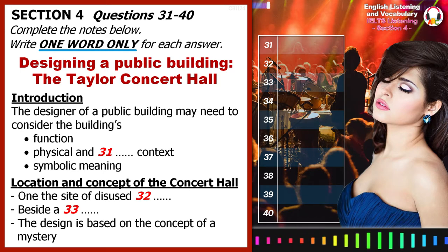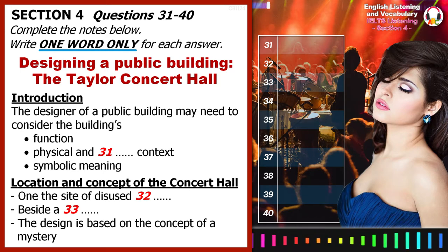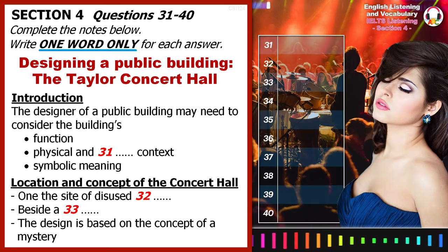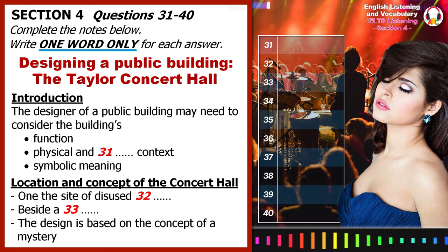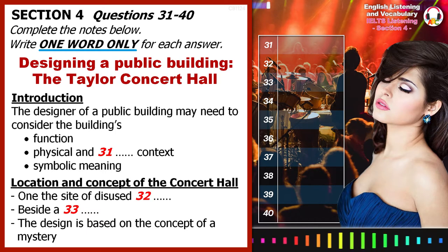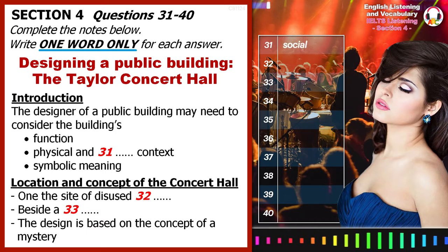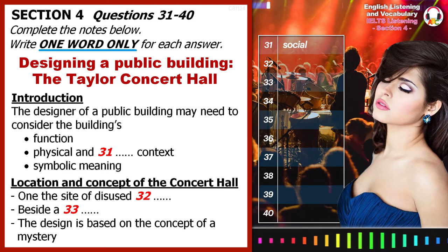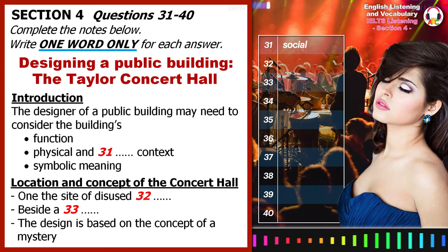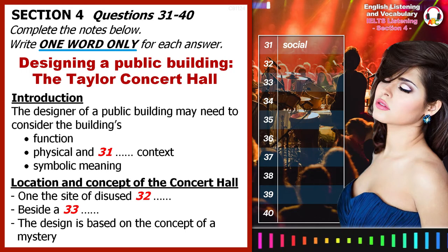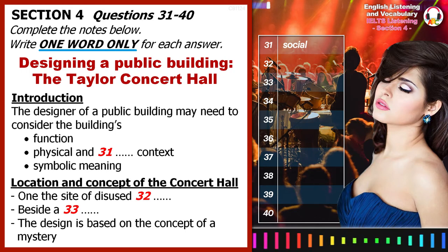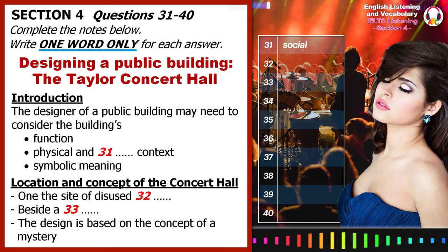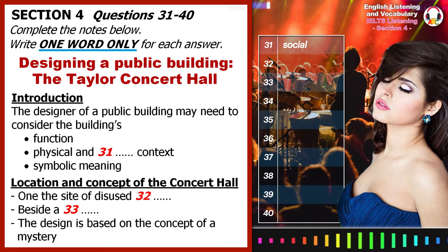The second thing the architect needs to think about is the context of the building. This includes its physical location, obviously, but it also includes the social meaning of the building — how it relates to the people it's built for. And finally, for important public buildings, the architect may also be looking for a central symbolic idea on which to base the design — a sort of metaphor for the building and the way in which it is used.